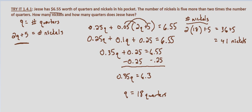So Jesse has 18 quarters and 41 nickels. Now how do we check this?